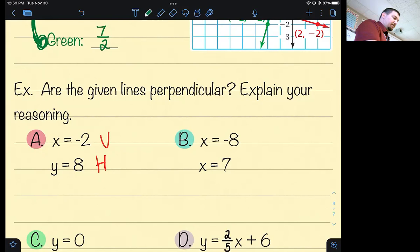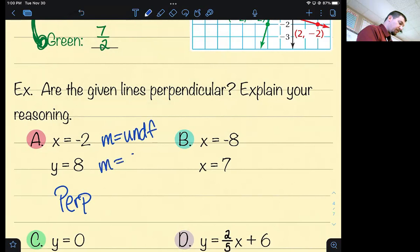So for example, x equals negative two is the equation of a vertical line. Y equals eight is the equation of a horizontal line. Are they perpendicular? Yes, they are. The slope of the vertical line is undefined. The slope of the horizontal line is zero. Horizontal and vertical lines are perpendicular.